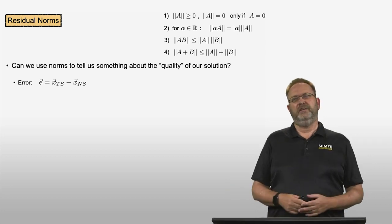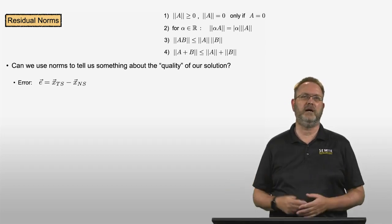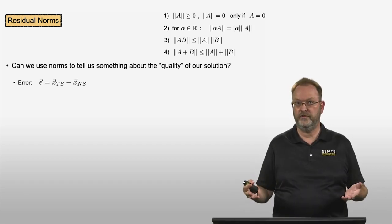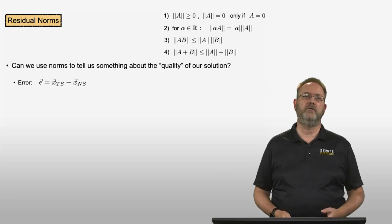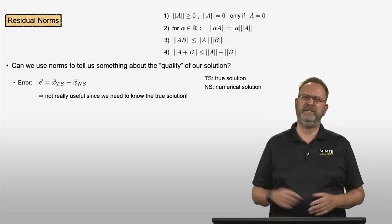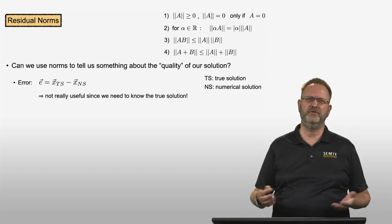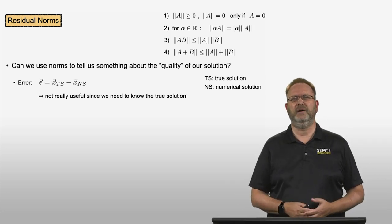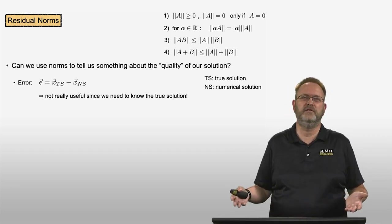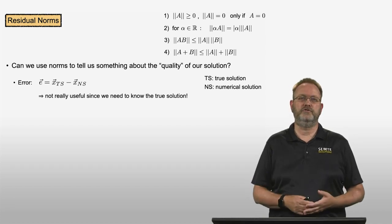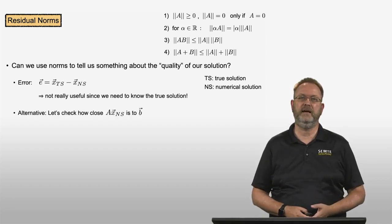If we talk about quality of our solution we should of course talk about an error. The error vector is defined as our true solution vector minus our numerical solution vector. But that's not really a very useful metric because we don't really know the true solution. If we knew the true solution, why would we bother with a numerical solution in the first place? In general applications we will not know the true solution, therefore we won't be able to calculate the error.